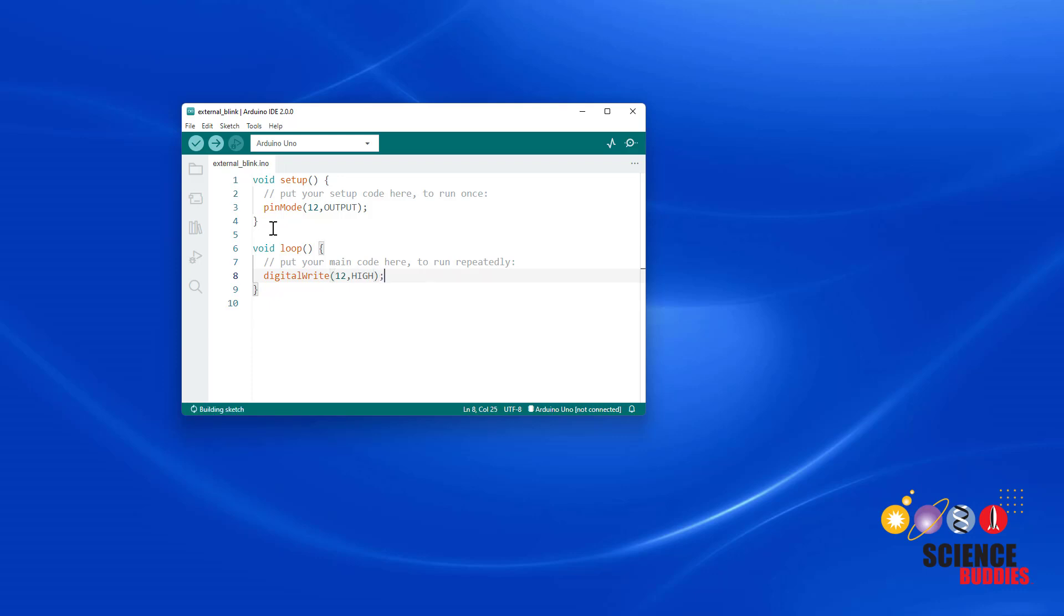Next, we want that pin to stay high for one second. So we're going to use the delay command. Type delay, open parentheses. But remember, don't just type 1 because the delay command works with milliseconds, not seconds. So we need to tell it to wait for 1000 milliseconds. And again, end the line in a semicolon.